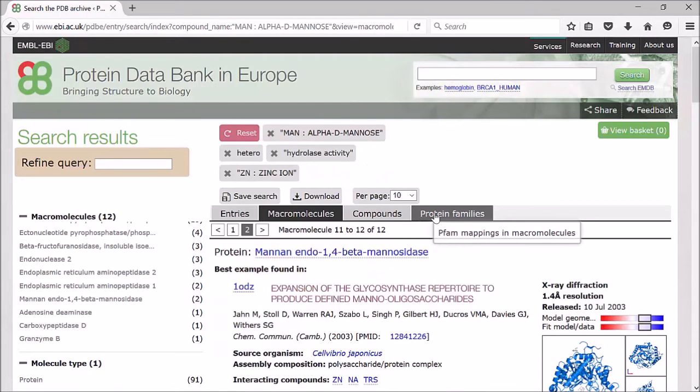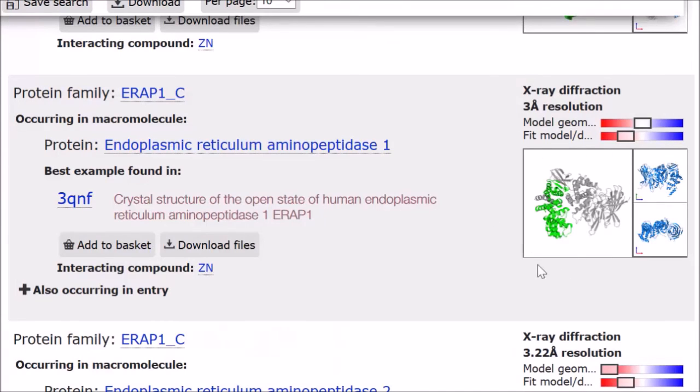The protein families tab separates entries by protein family rather than by entry type, and again gives best example and where it also occurs. You also get an image on the right here of where that protein family domain is within the structure.